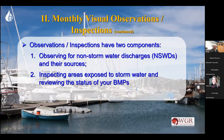There are two components to the monthly inspection. One, you're observing for non-stormwater discharges that may be leaving. This is important because there are certain types of non-stormwater which are allowed to leave — irrigation, potable water, and different things are authorized to leave your property as long as they leave relatively clean. Water leaving your property must meet certain criteria, so you can't just let water leave even if it's an authorized non-stormwater discharge — it's only authorized if it leaves relatively clean.